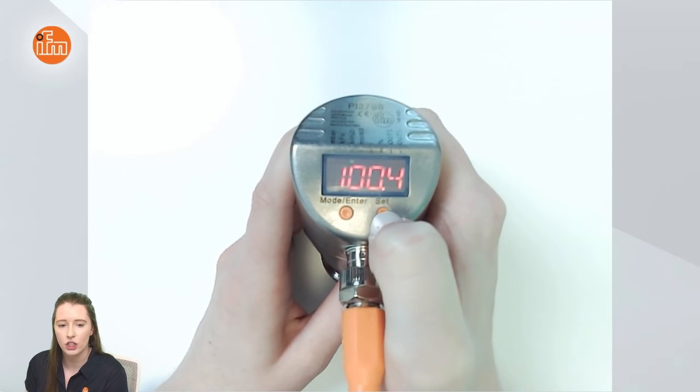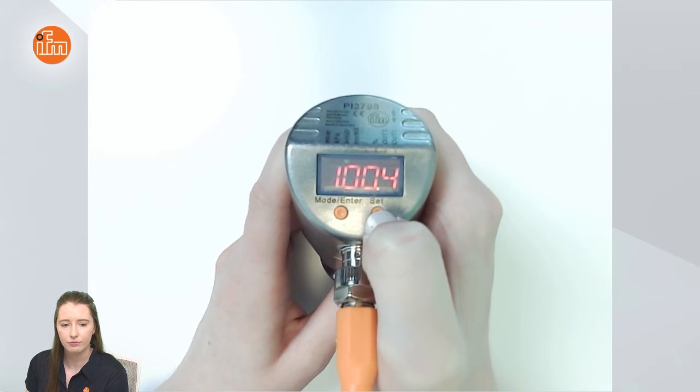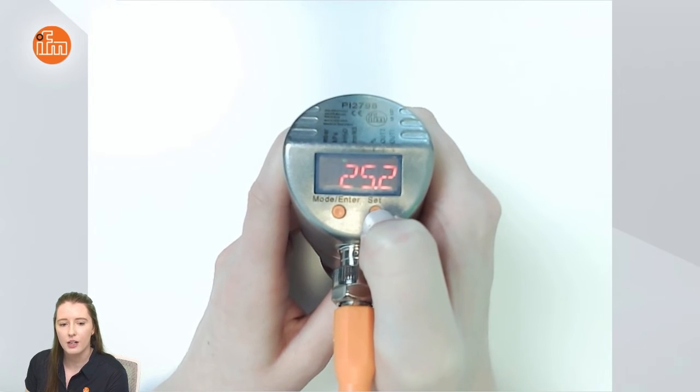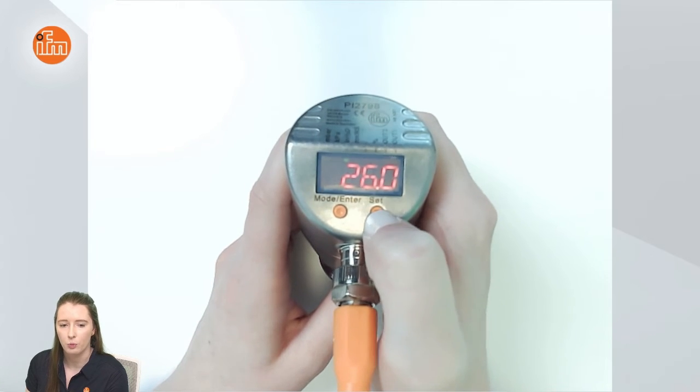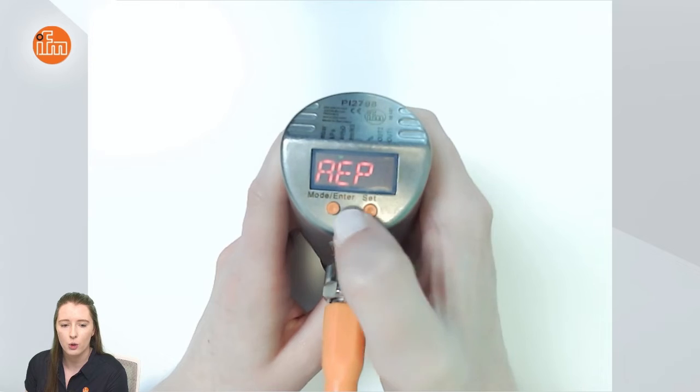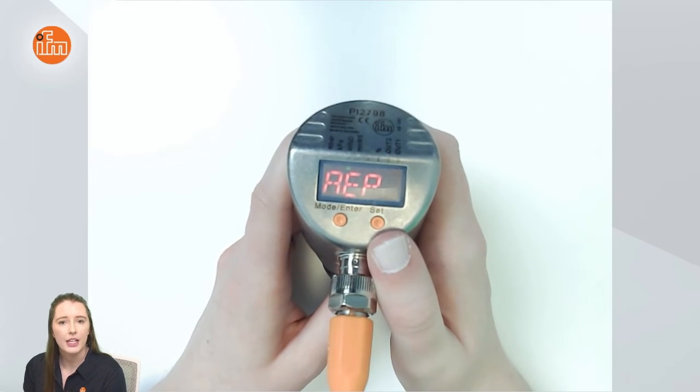It'll begin to flash and then scroll through your options. So for this video I will set it for 26 inches of water column. When you're at the value you want to set it for you'd press mode enter and aep is what is representing the 20 milliamps of your analog output.